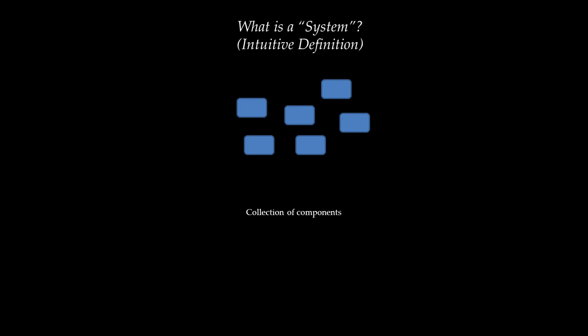If we think about the typical everyday use of the word 'system,' especially in engineering discussions, most of the time we're talking about a collection of components. It's very unusual to talk about a system that contains only one component. The second thing is that these components are not just sitting in isolation — we think about them as interacting with one another and working together to achieve a goal.